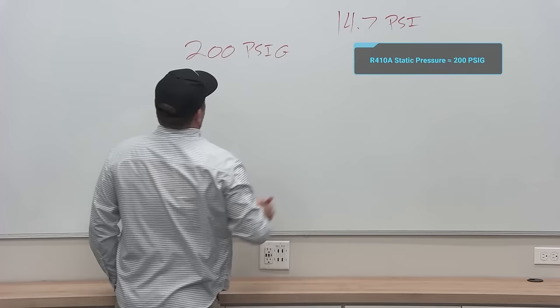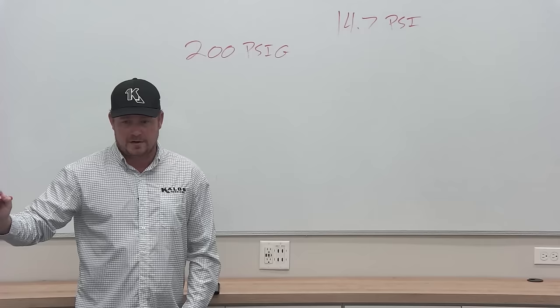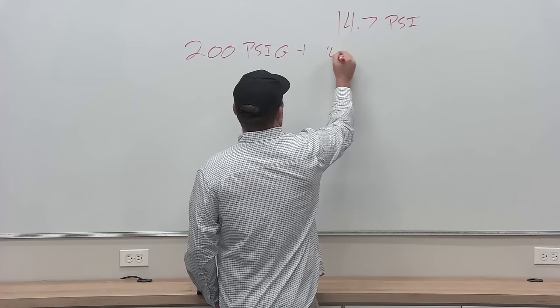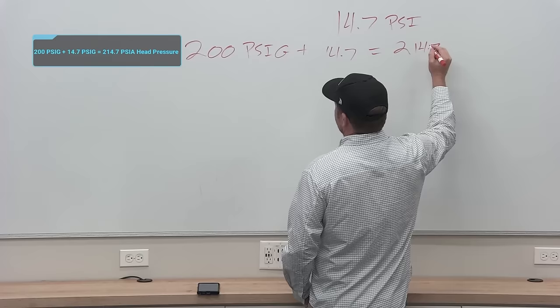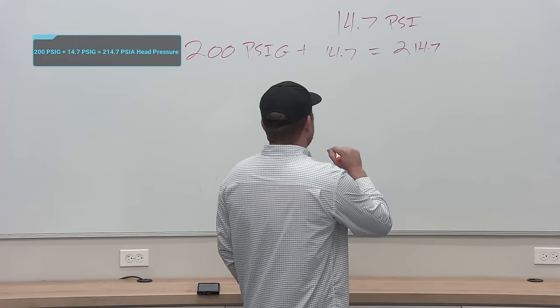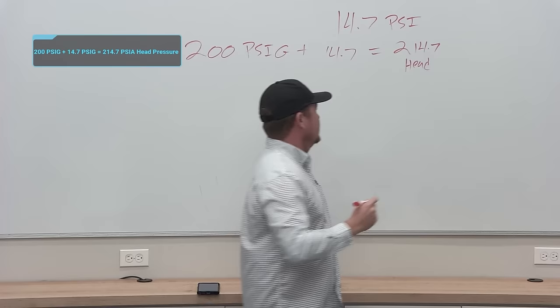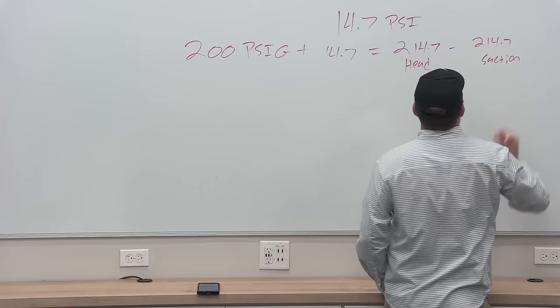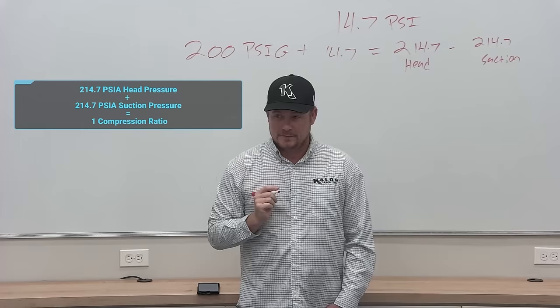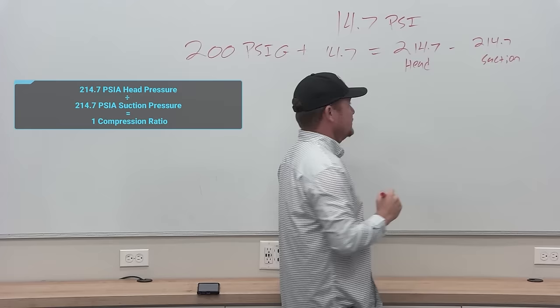That's 200 PSIG — pounds per square inch gauge — and that gauge pressure is zeroed at atmospheric pressure. To convert to absolute, you add 14.7, so 200 plus 14.7 equals 214.7 PSIA. If the system isn't running, both head and suction are 214.7 absolute. So 214.7 divided by 214.7 gives us a compression ratio of one.